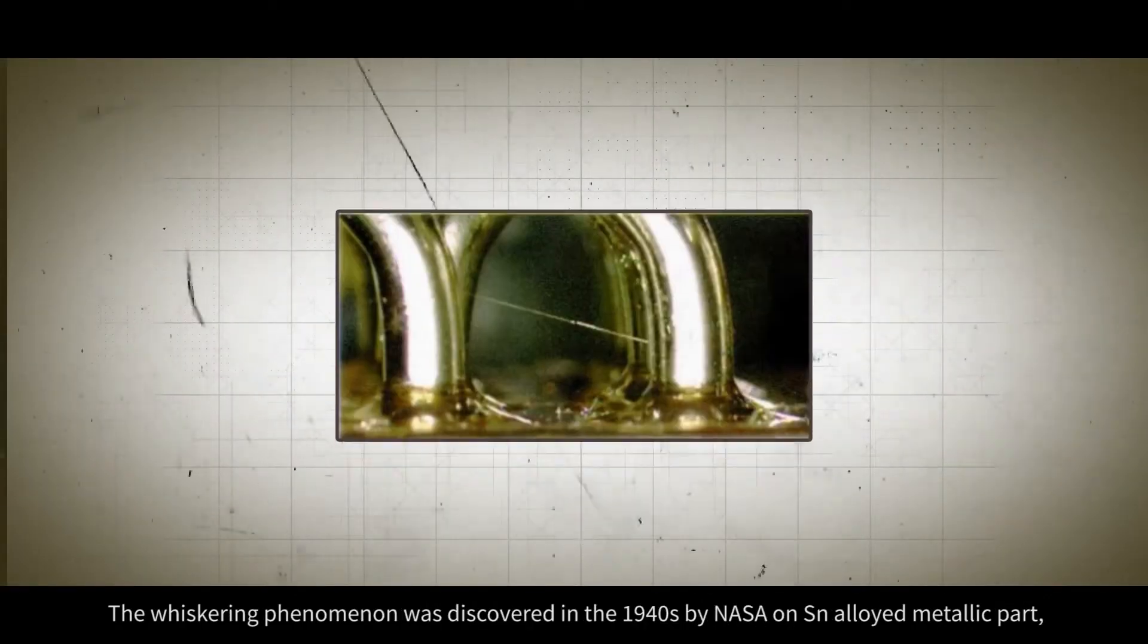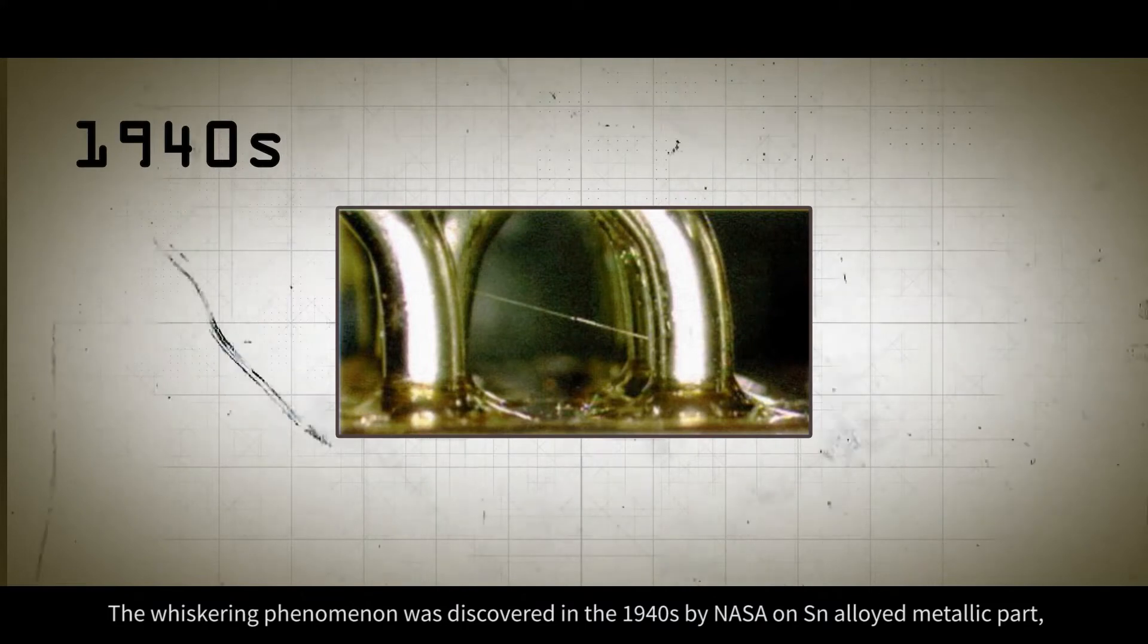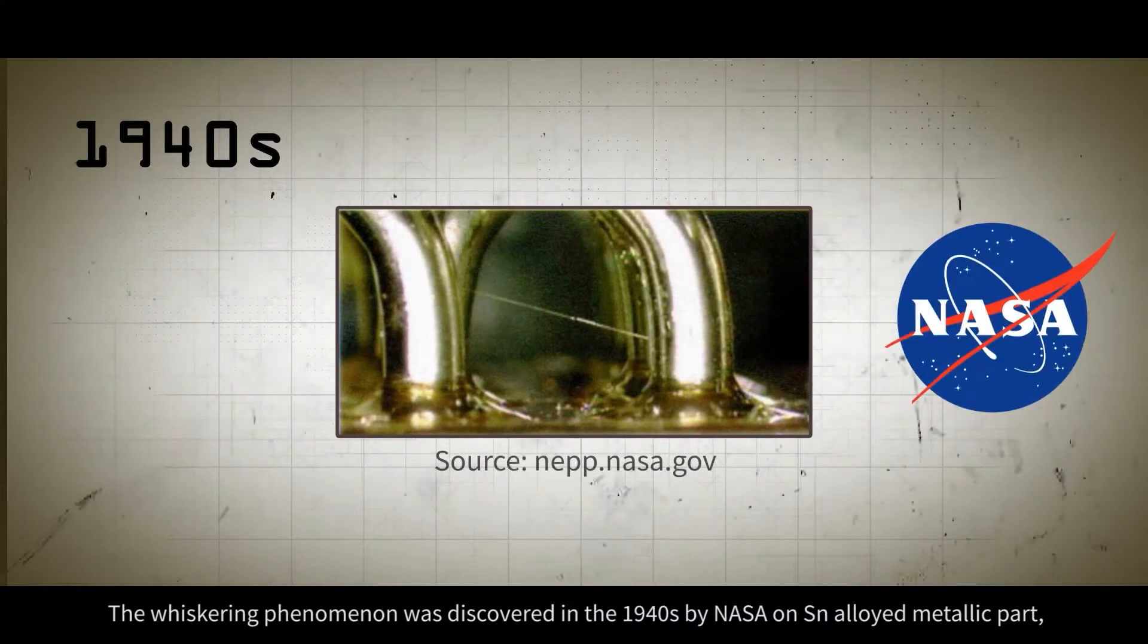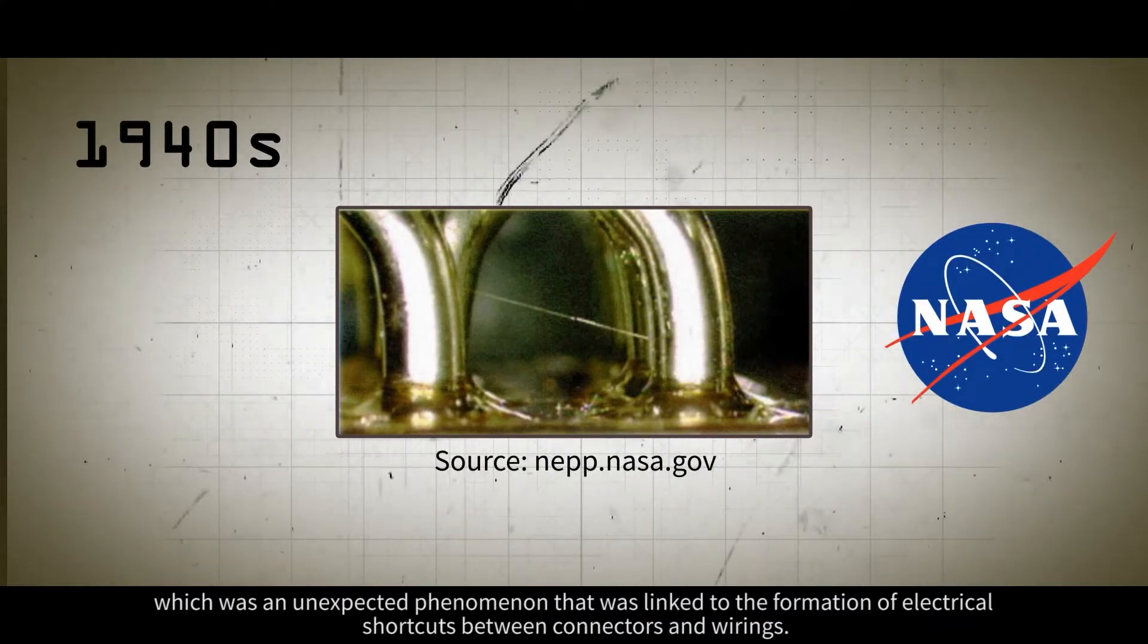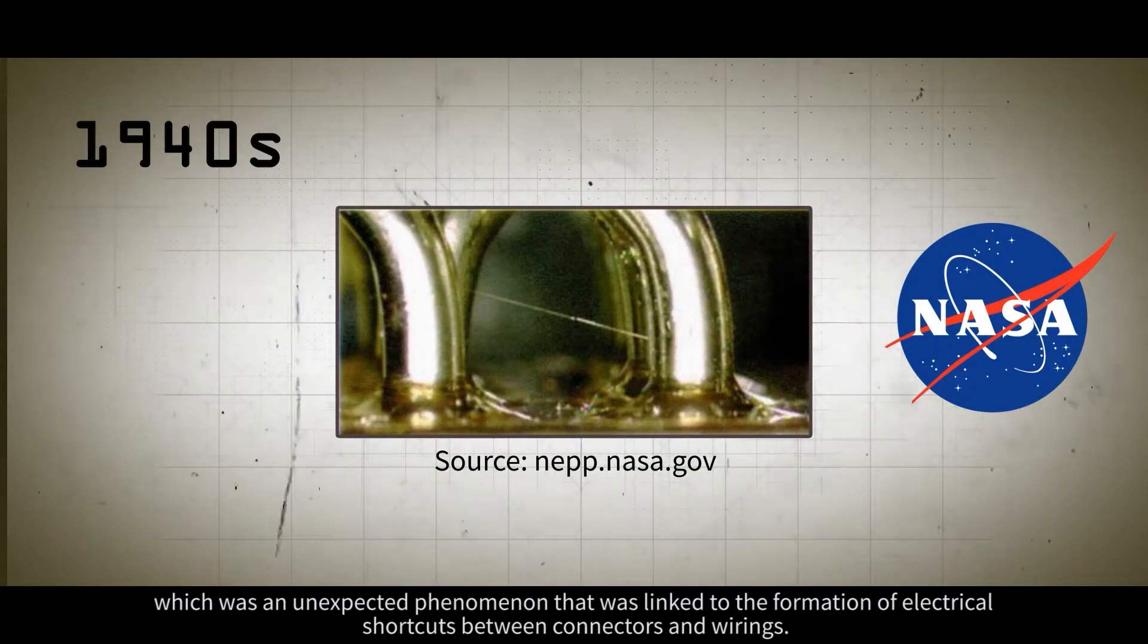The whiskering phenomenon was discovered in the 1940s by NASA on a tin alloyed metallic part, which was an unexpected phenomenon that was linked to the formation of electrical shortcuts between connectors and wirings.